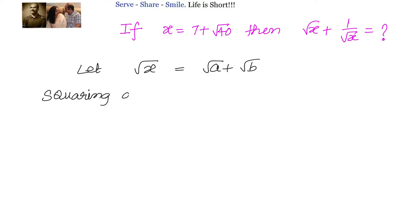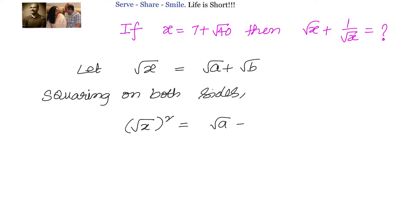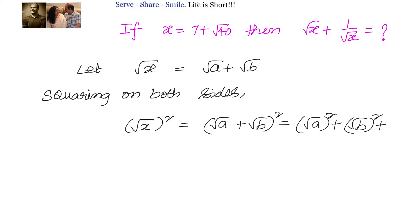Squaring on both sides, we will have root x whole square equals root a plus root b whole square, which expands to root a whole square plus root b whole square plus 2 into root a into root b. Using the identity, this gives us x equals a plus b plus 2 root ab.